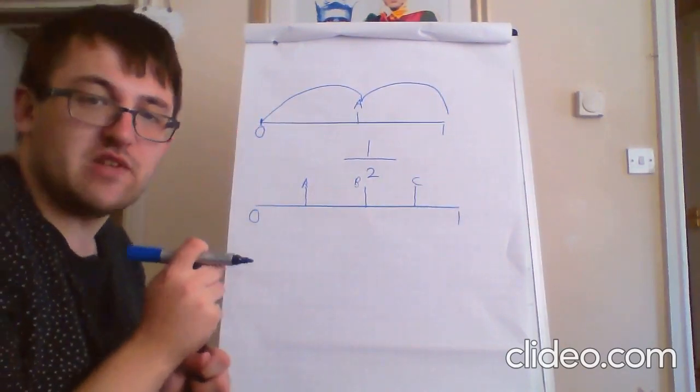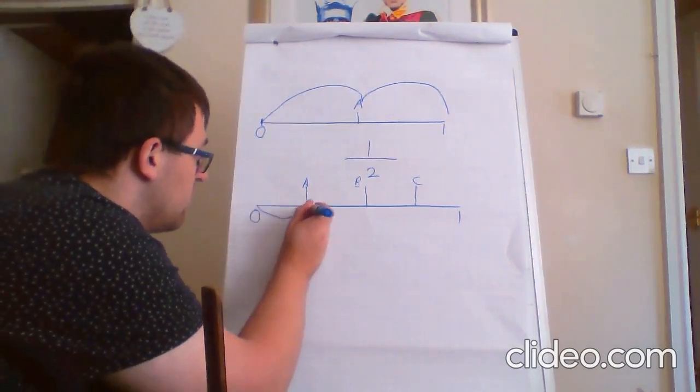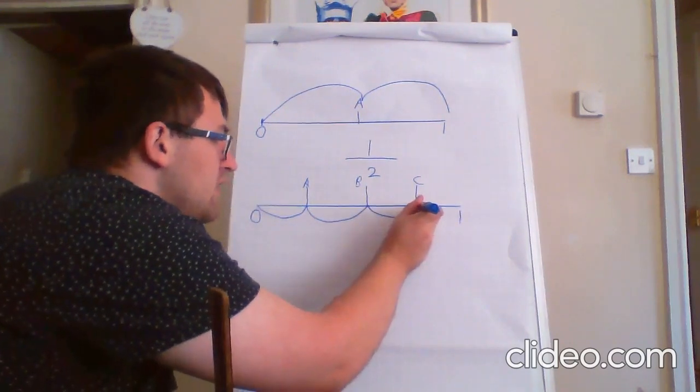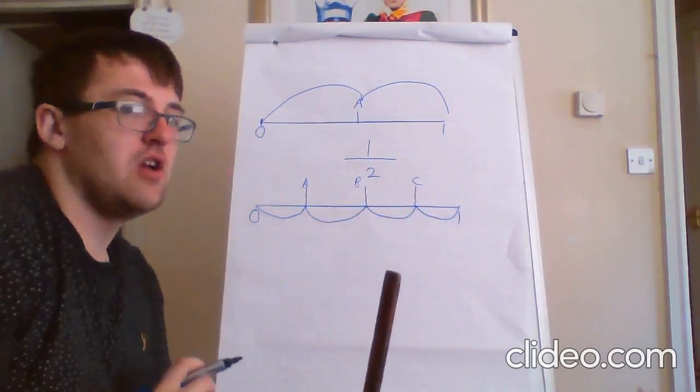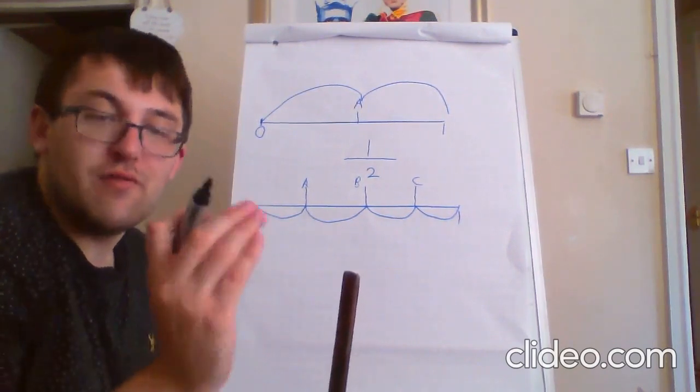So, first things first. Let's count those jumps. So, we've got one, two, three, four, which means my denominator is four.